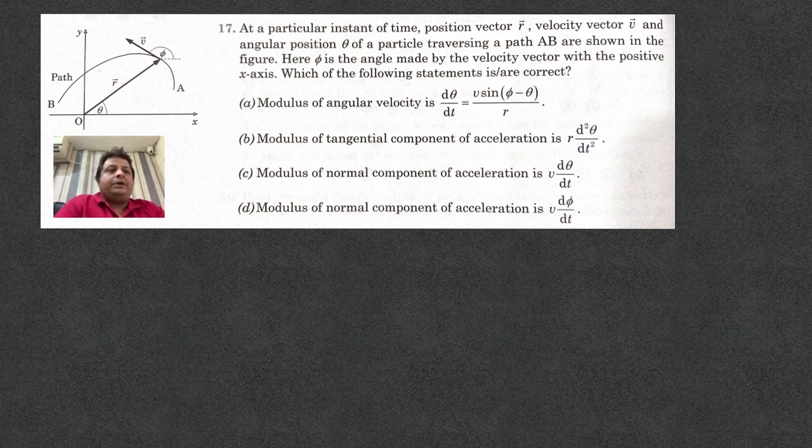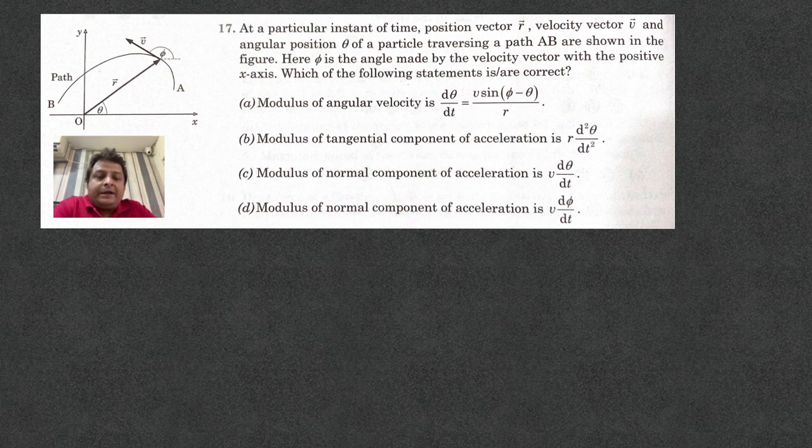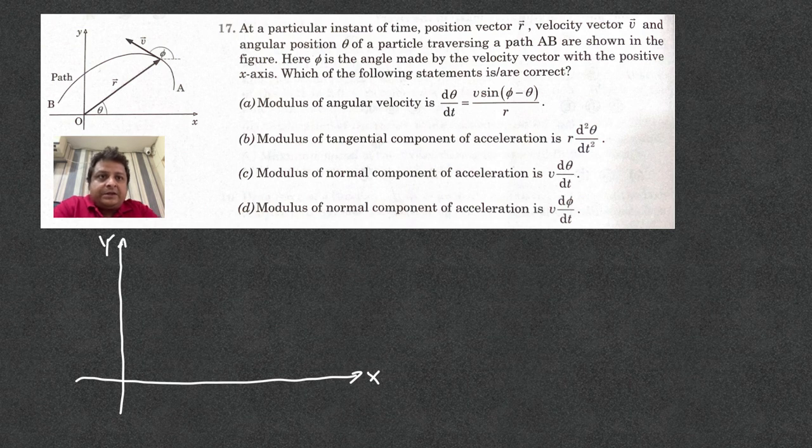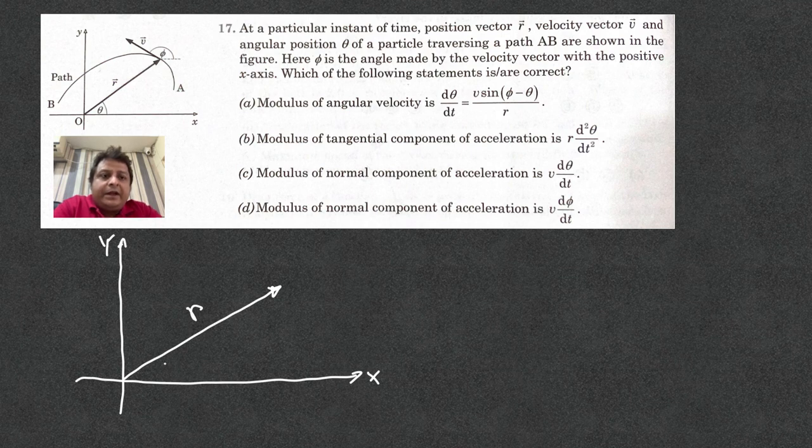Now, let us find out the angular velocity first. So, finding the angular velocity, we draw the axis, x-axis and y-axis, there you have position vector r.